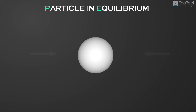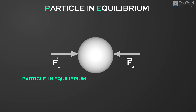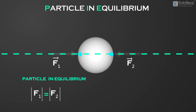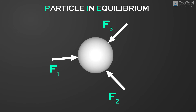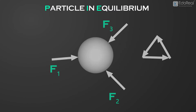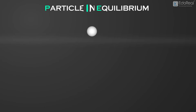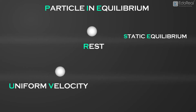For example, if there are only two forces acting on a particle that is in equilibrium, then the two forces must be equal in magnitude and opposite in direction, with the point of application being the same. And if three forces act on a particle that is in equilibrium, then when the three forces are placed end to end, they must form a triangle. Hence, we say a particle is in equilibrium if it is at rest and remains at rest, or it moves with constant velocity.